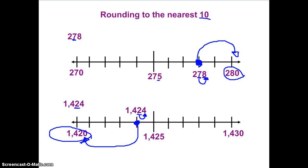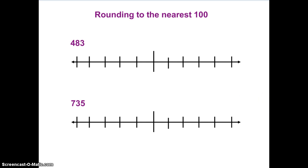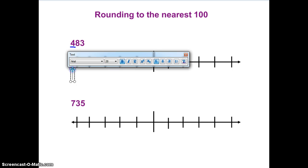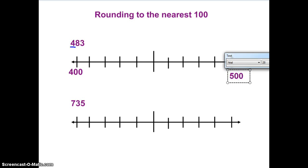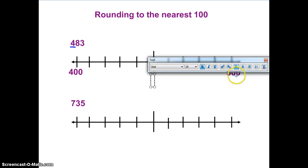278 rounds to 280. So that's rounding to the nearest ten. What happens if I'm rounding to the nearest hundred? This time I'm dealing with the hundreds place. This means on my number line I'm not dealing with tens anymore, I'm dealing with hundreds. Here I have 400 at the beginning of my number line, and at the end is the next hundred — 500, because I'm rounding to the nearest hundred. I'm looking to see if 483 is closer to 400 or 500. What is in between 400 and 500? Right in the middle of 400 and 500 is 450.